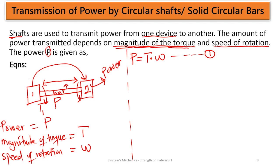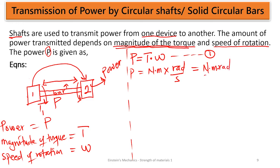In order to get the unit of power, we are going to further simplify this formula and derive the unit. Torque is measured in Newton·meters, multiplied by omega which is angular velocity measured in radians per second. So this unit gives us Newton·meter·rad per second, which is Watts — the unit of power.